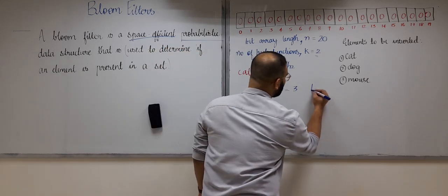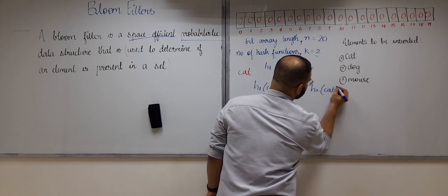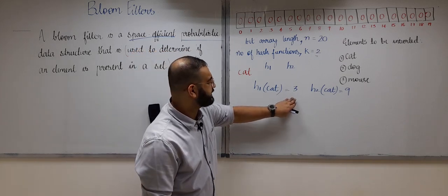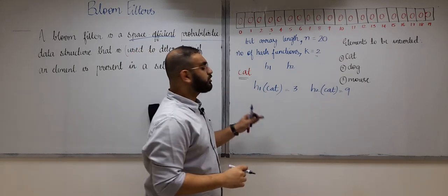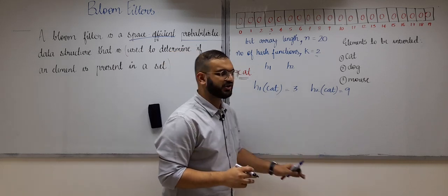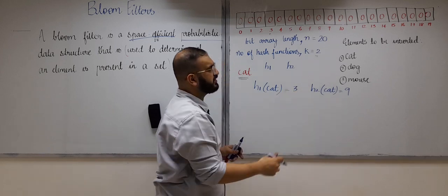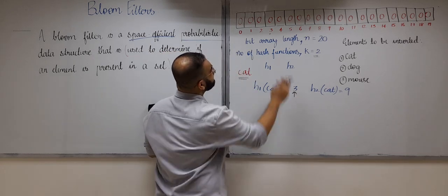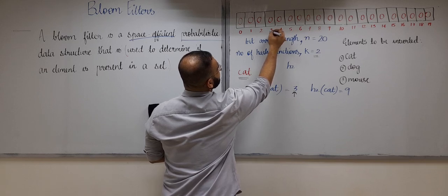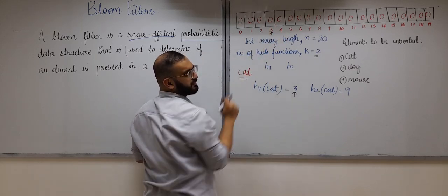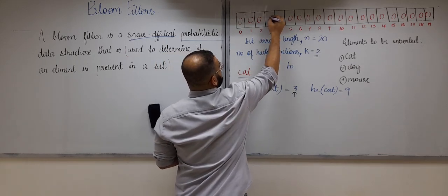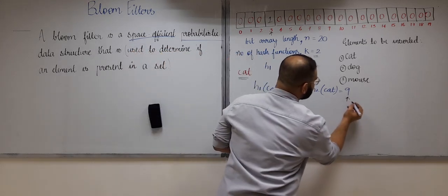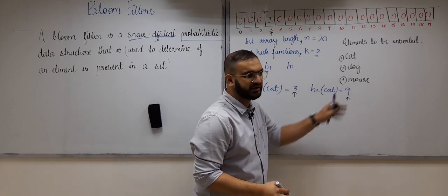Suppose h1(cat) comes out to be 3 and h2(cat) comes out to be 9. After finding the hash values — here there are two hash functions — I go to index 3 and ensure the bit at index 3 is 1. Since it is currently 0, I make it 1. Then I look at the second hash function output of 9, so I go to index 9.